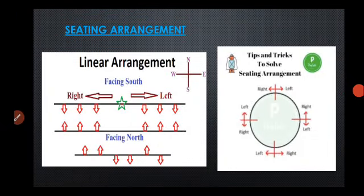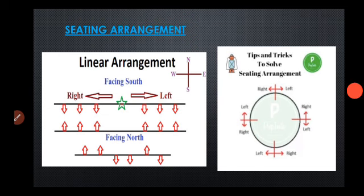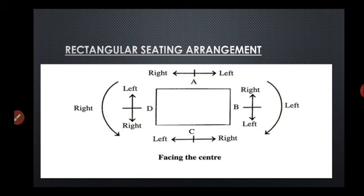Next is seating arrangement. Total four types of seating arrangements are there. First one is linear seating arrangement. Suppose in the seating arrangement, someone is sitting facing south and some are sitting facing north. You can see which side right will be there and which side left will be there. Then the second type of seating arrangement is circular seating arrangement. In this, if they are facing inside, then how left and how right will be there, you can observe here. The next is rectangular seating arrangement. In rectangular seating arrangement, how left and how right will be there, you can see here. And they all are facing the center. Thank you very much.